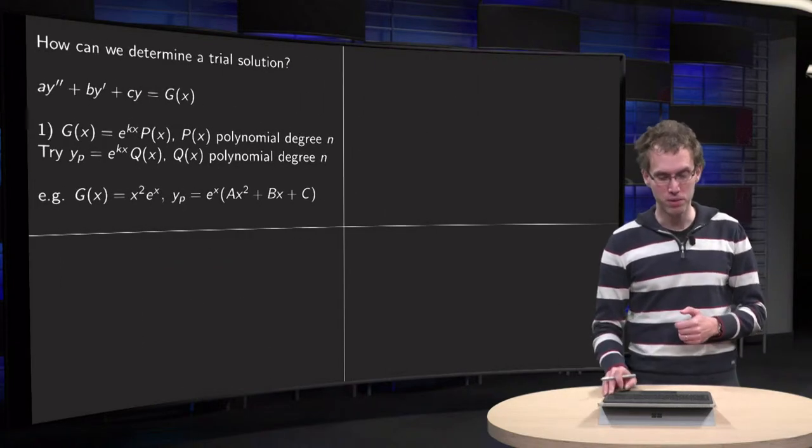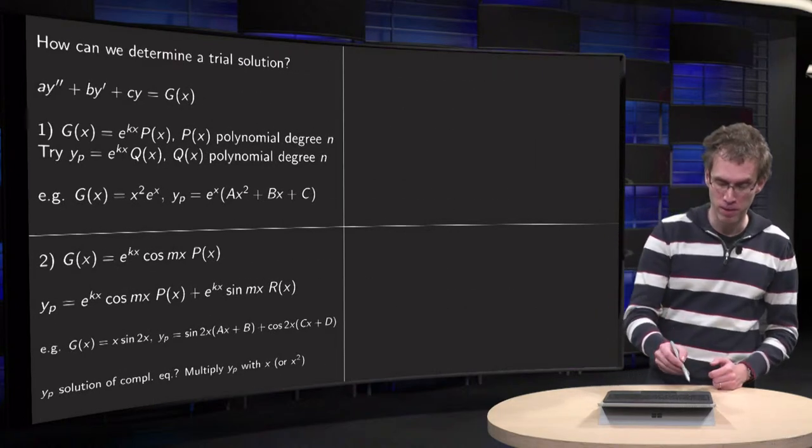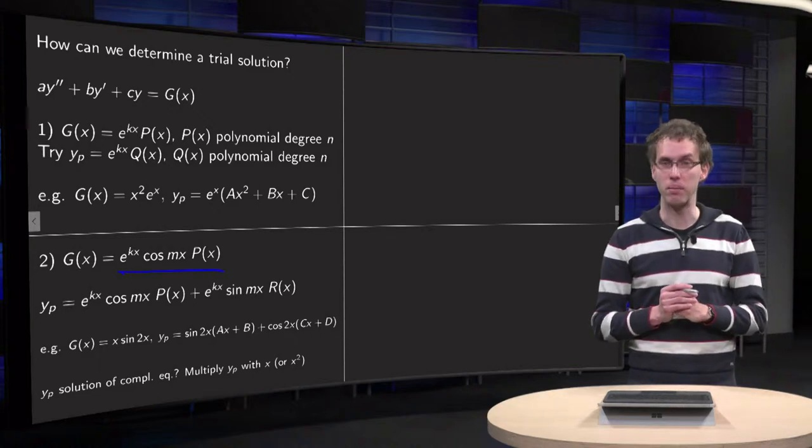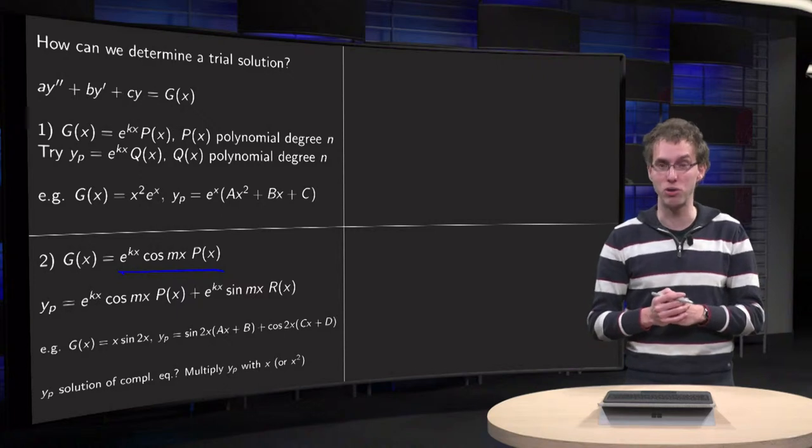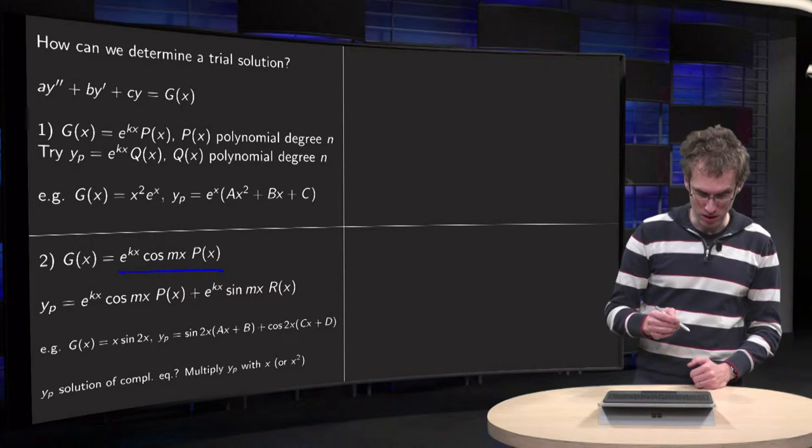Now what happens if you also have sines and cosines? For example, if g of x equals e to the power kx times cosine mx times p of x, or equivalently if you have a sine instead of a cosine. What can you do in that case? Well, in this case you do something similar.